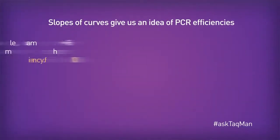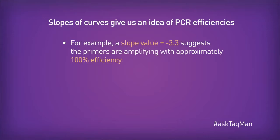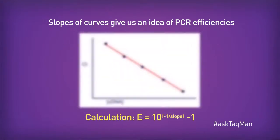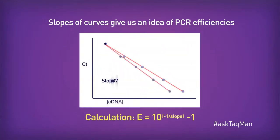If the slope is negative 3.3, then the assay is amplifying at or very near 100% — exactly what we want in quantitative real-time PCR. But if that value is more negative than this, say negative 3.7, then the efficiency will be less than 100%. There's actually a formula into which you can plug this slope and get your numerical efficiency.